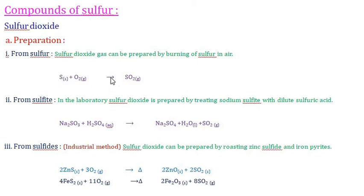The next important topic is compounds of sulfur. Sulfur shows two types of compounds: sulfur dioxide (SO2) and sulfur trioxide (SO3). For sulfur dioxide, there are three methods of preparation.